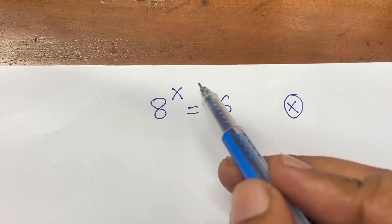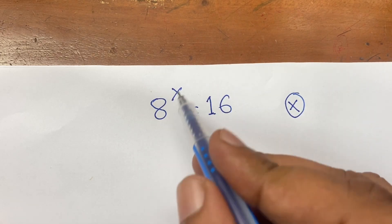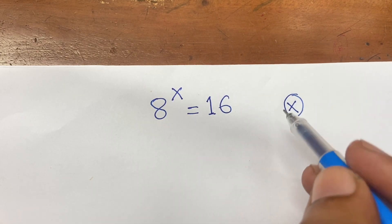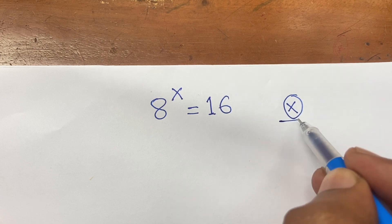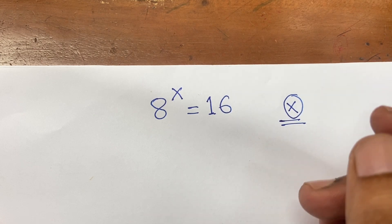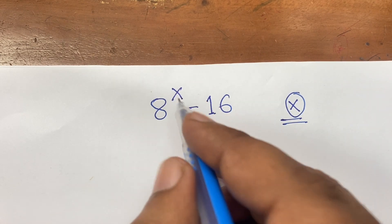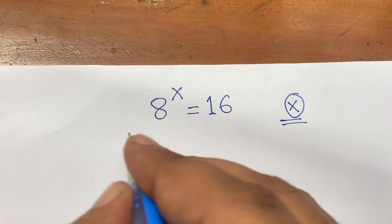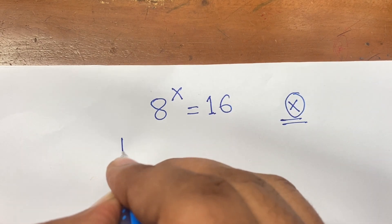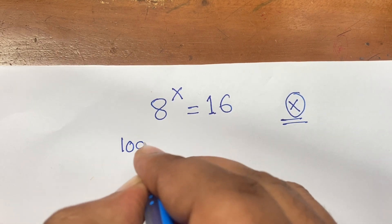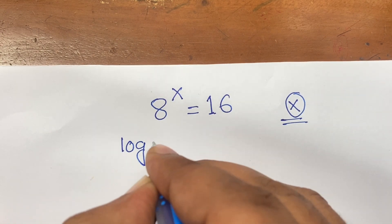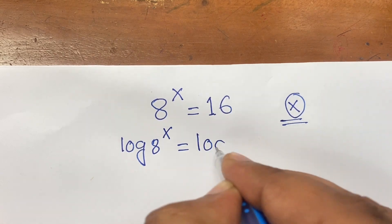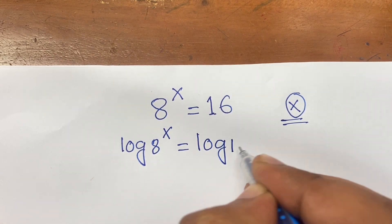Hello everyone. This exponential equation is 8 to the power x equal to 16, where we find out what is the value of x. Here is 8 power x equal to 16. I use both side log, so log 8 power x equal to log 16.